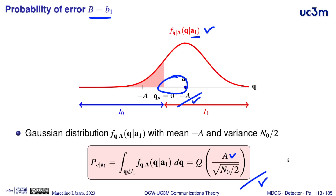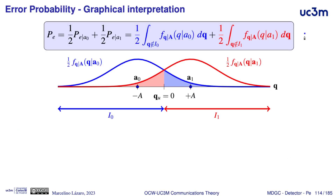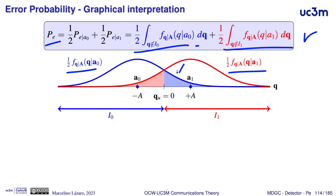So the two conditional probabilities are equal in this case. Here we have a visual representation of the probability of error: one half of the conditional distribution given A0 and one half of the conditional distribution given A1. The probability of error is one half the integral of the first one plus one half the integral of the second one. This corresponds to the blue area shown here plus the red area shown here.